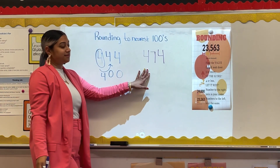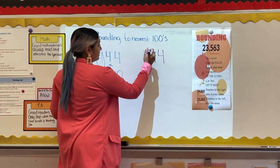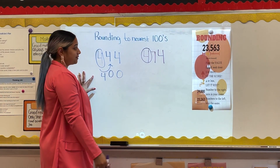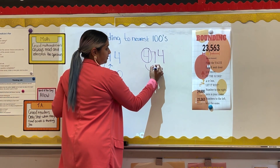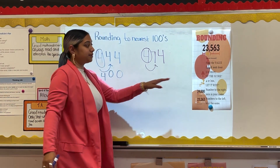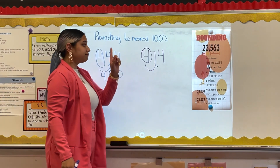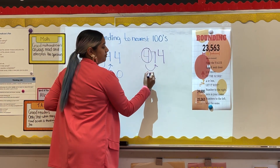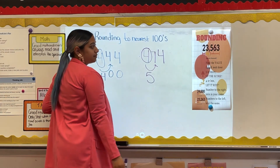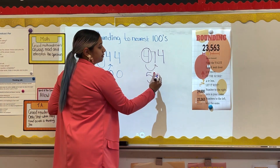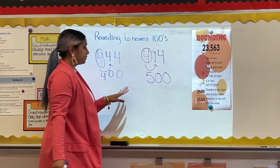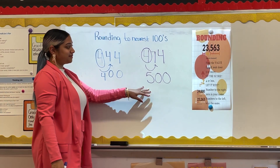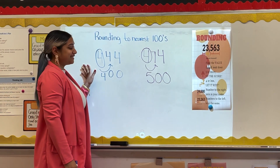Let's take a look at another example. I'm going to circle my four because I'm rounding to the nearest hundreds and it's in the hundreds place. I look next door and I see a seven. Five or more, we up the score, so my four is going to go up by one and change into a five, and everything to the right gets changed into zero.